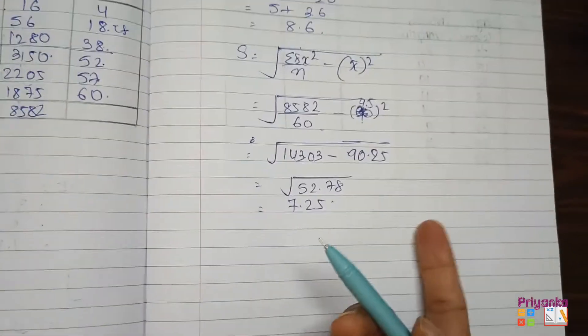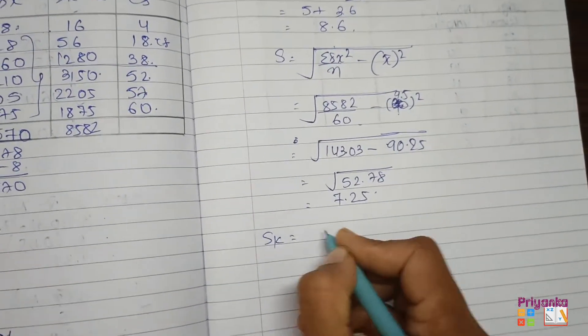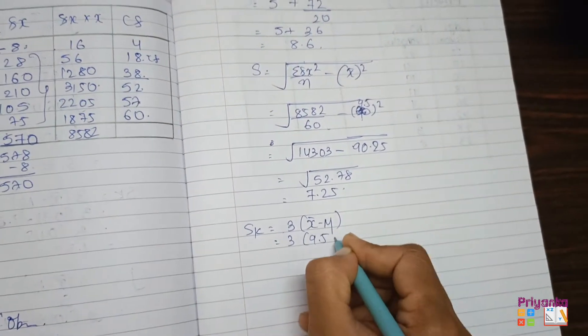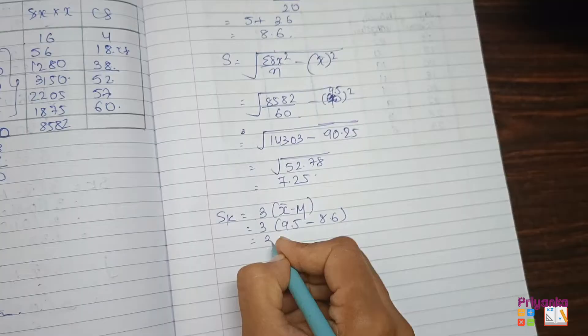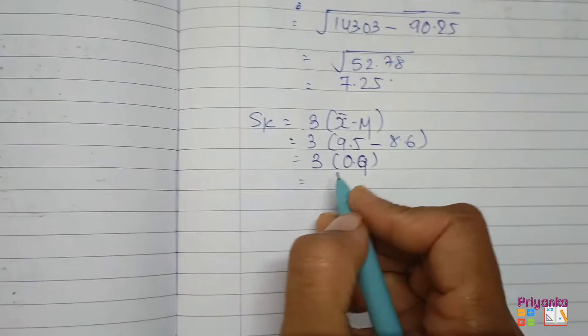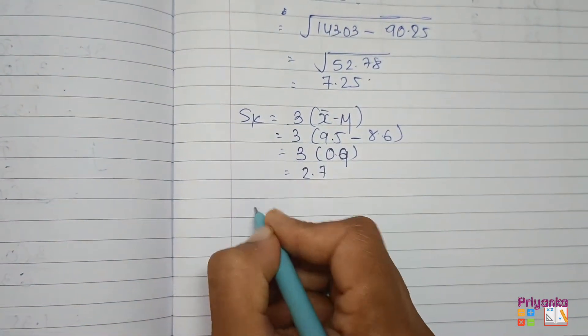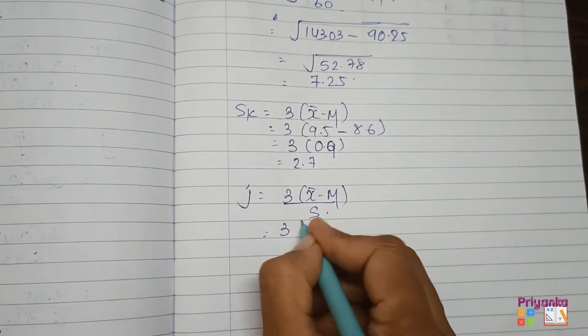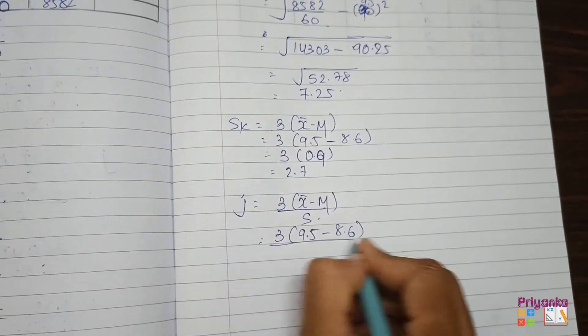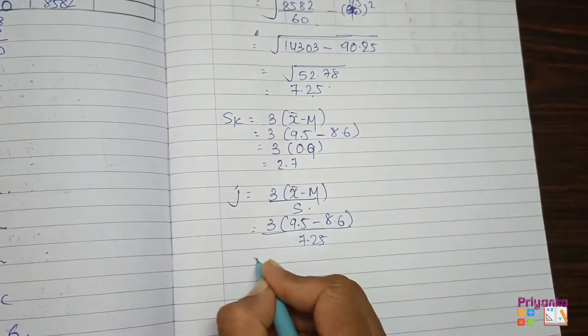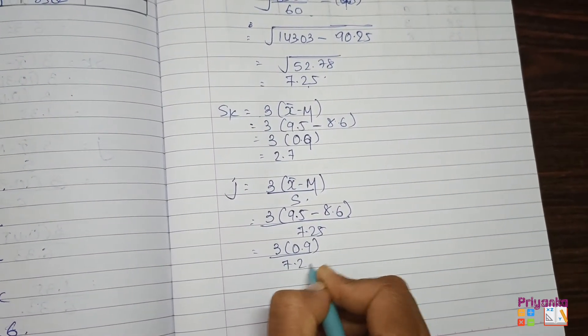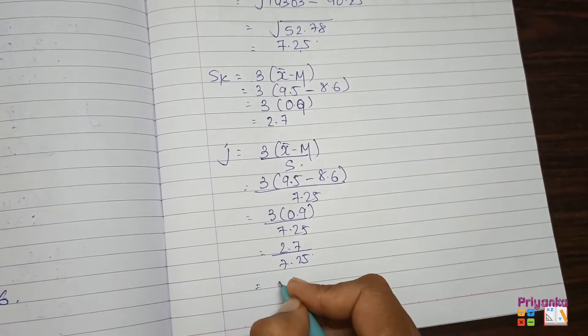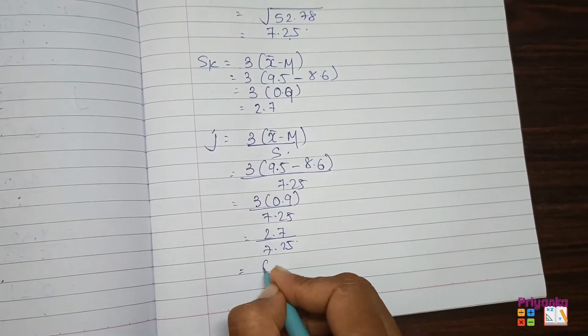In the question they ask for skewness as well as coefficient of skewness. Skewness formula when using median is 3 mean minus median. 3 times the mean 9.5 minus median 8.6. Subtracting you get 0.9 multiplied by 3 gives 2.7 for the skewness. Now coefficient of skewness is 3 mean minus median upon standard deviation. So 3 into 9.5 minus 8.6 gives 0.9 upon 7.25. This gives 2.7 divided by 7.25, and here we get the final answer, 0.37.